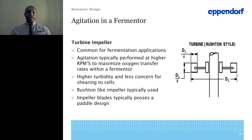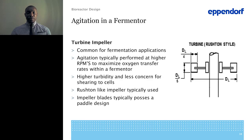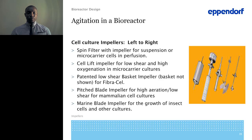In fermentation, agitation is performed at higher RPM to maximize oxygen transfer rate and provide higher turbulence. There is less concern for shear damage to the cells. The Rushton-type impeller is typically used for that, and the impeller blade typically possesses a paddle design as shown on the right of the screen.